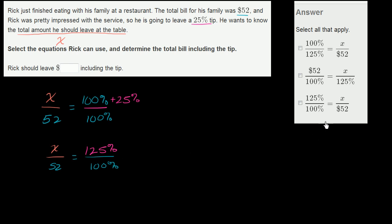Now if we look at the choices here, this looks exactly like this. If we just swap the left and right hand side, we get 125% over 100% is equal to x over 52. So we can select this one.